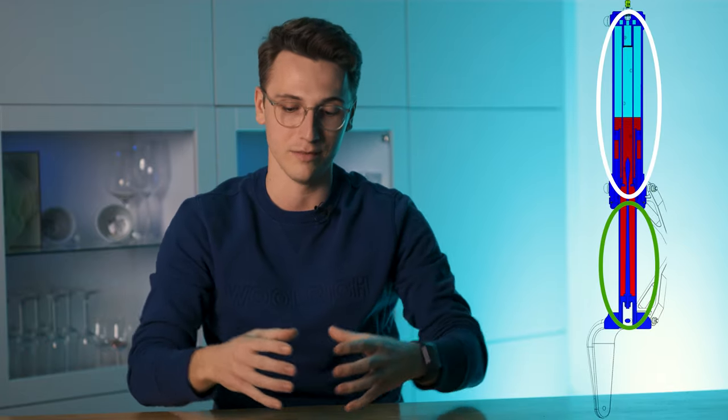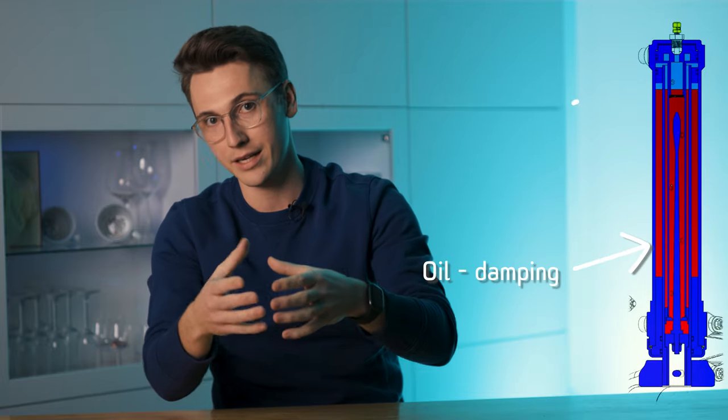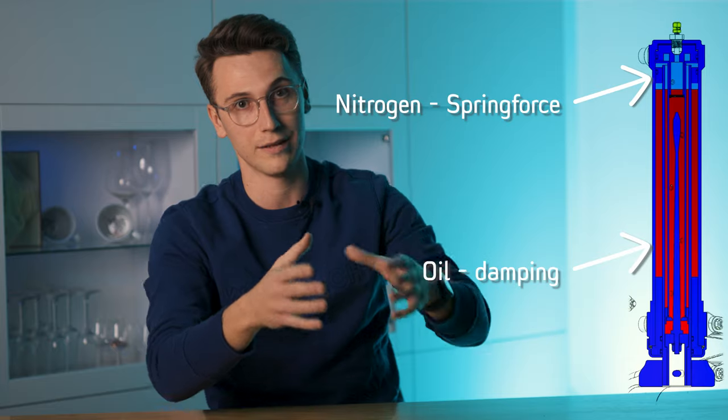The Oleo pneumatic shock absorber is used on modern aircraft because it absorbs the main part of the load during a landing. How does it work? We've got an outer cylinder and a thinner inner one. The outer one is filled with nitrogen, the inner one is filled with hydraulic fluid like oil. On touchdown, the inner cylinder is pushed into the outer cylinder. The oil provides the damping and the nitrogen provides the spring force, and together they absorb the bulk of the load.